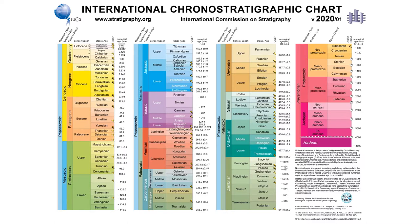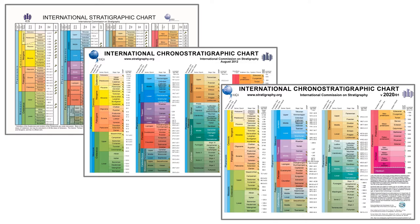The formal geologic time scale used by scientists is known as the International Chronostratigraphic Chart. It includes not just the names of the time intervals, but also their absolute ages, measured in millions of years, and determined from absolute dating methods. The chart is produced by a collaborative academic organization known as the International Commission on Stratigraphy. The Commission revises the chart almost every year, and sometimes multiple times a year.